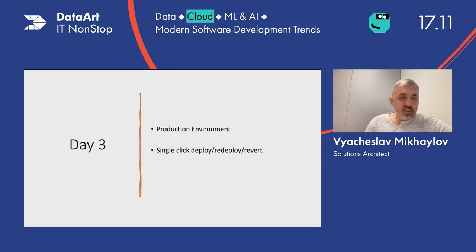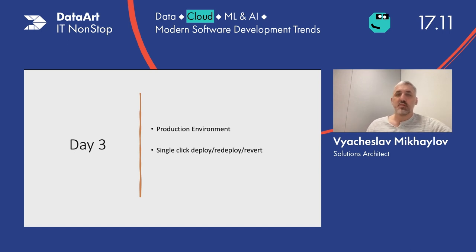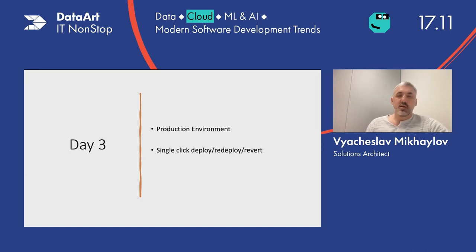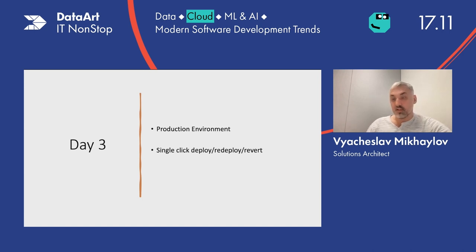Day three is an abstract day three — it means we are ready for production. We have some number of sprints behind us, we've made an MVP, and we have a pre-production or even production environment. Again: automation, automation, automation — everything should be automated. That's very important.